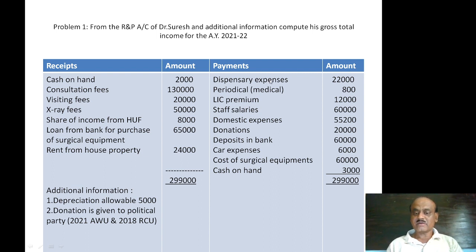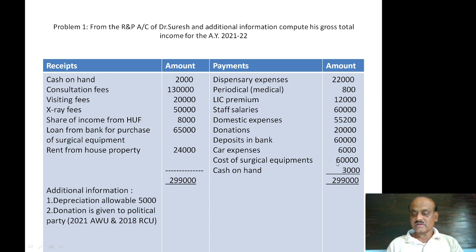Payment side: dispensary expenses Rs. 22,000; periodicals relating to medical Rs. 8,800; life insurance premium Rs. 12,000; staff salary Rs. 60,000; domestic expenses Rs. 55,200; donations Rs. 20,000; deposits in bank Rs. 60,000; car expenses Rs. 6,000; cost of surgical equipment Rs. 60,000; cash on hand Rs. 3,000. Total Rs. 2,99,000. Additional information: depreciation allowable Rs. 5,000; donation is given to a political party.